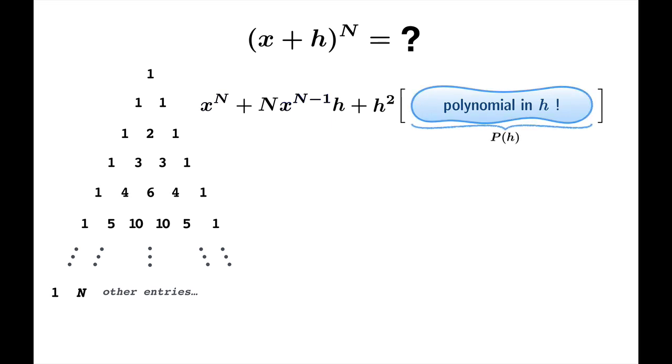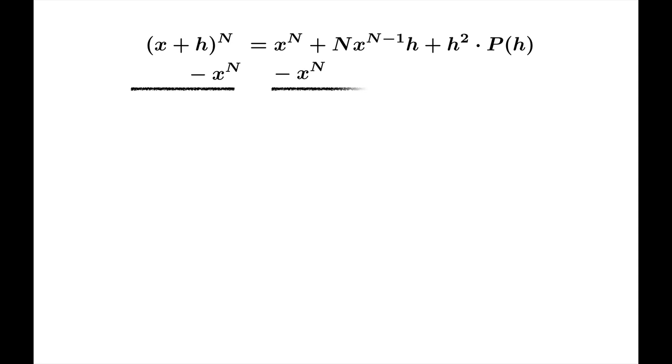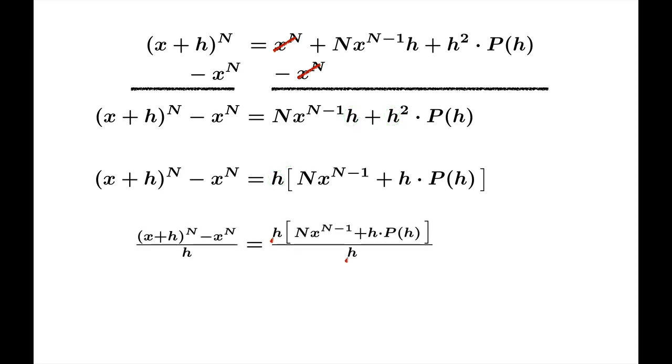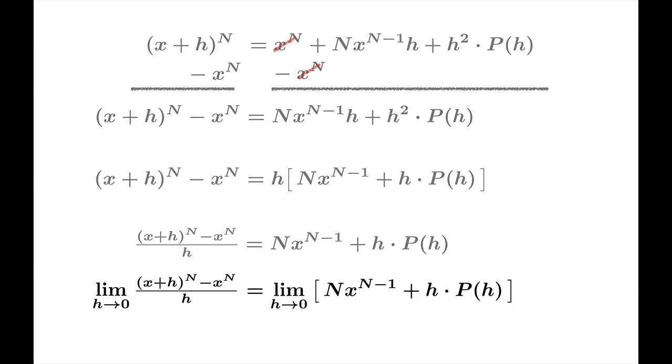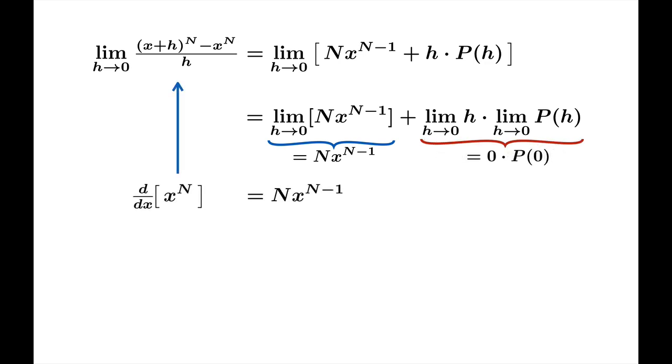So we can write x plus h to the n as x to the n plus n x to the n minus 1 times h plus h squared times p of h. Let's subtract off x to the n from both sides and factor out the common h and divide by h to obtain this expression for the secant slope. And now we need to look at the limit as h approaches 0. We have the sum and product laws for limits. This is the limit of a constant, so it's just n x to the n minus 1. This limit is 0, and this limit is p of 0. So that term winds up being just 0. Here's our definition of the derivative of x to the n.